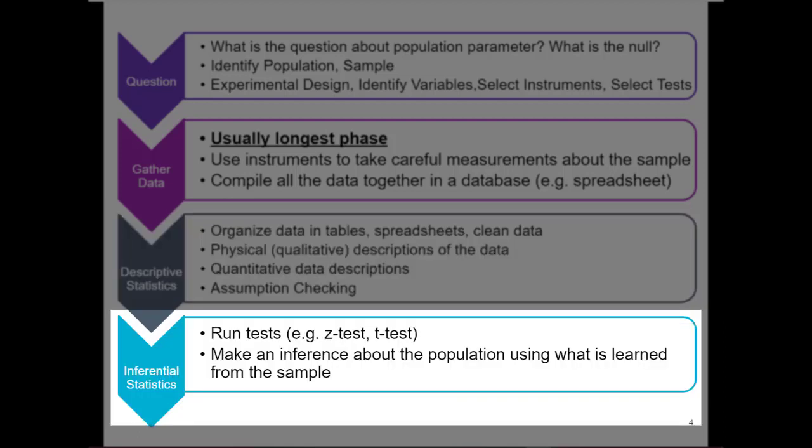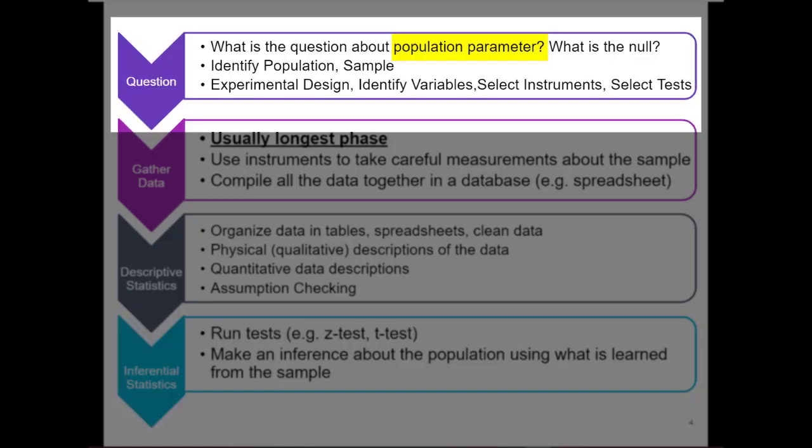The last phase is called the inferential statistics phase. In that phase we use our sample to run tests, and we depend on probability to determine if there is a statistically significant difference of some kind between the population and the sample. At the end of the inferential statistics phase we answer our question, making an inference about the population using what we learned from the sample — so it goes back to the question we asked about the population parameter in the very first phase.